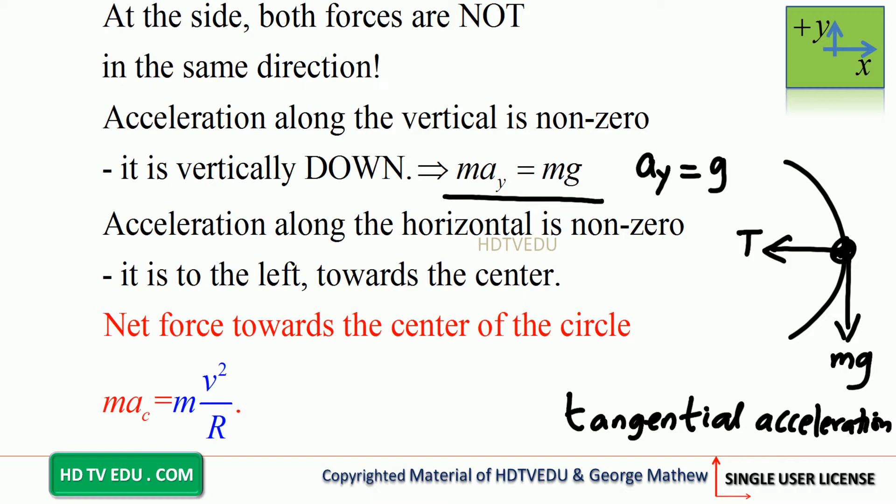That is the tangential acceleration. The magnitude of the tangential acceleration at the position shown is just the acceleration due to gravity. What about acceleration along the horizontal? That's non-zero — it is to the left, towards the center. The only force acting towards the center is tension. So, tension equals mv²/r.